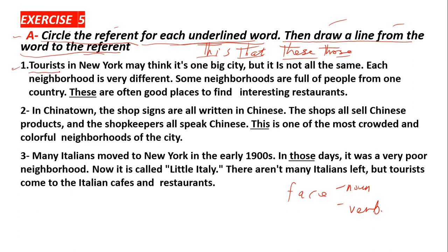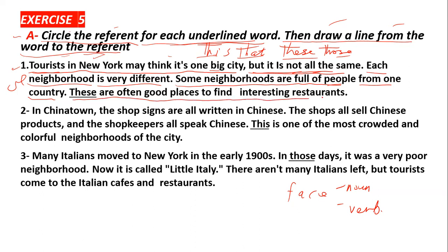Number One. Tourists — السواح — in New York may think it's one big city, السواح في New York يتصورون أنها مكان واحد, but it is not all the same, ولكن ليست كلها متشابهة. Each neighborhood, كل حي, is very different, مختلف. Some neighborhoods are full of people, بعض الأحياء مليئة بالناس, from one country, من دولة واحدة, from one nationality, جنسية واحدة. These are often good places to find interesting restaurants, هذه غالباً أماكن جيدة لإيجاد مطاعم ممتعة.